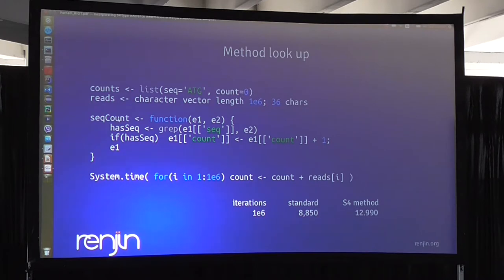This is a very simple basic function to just show the effect. This is a function that counts how often the sequence ATG, which is the start of any given gene, occurs in a vector of a million reads that contain 36 characters. You do a grep whether this ATG is there, and if it's there then you increase the count with one. If you use this standard function for a million reads, it's going to take you about nine seconds. You do the same with S4 method - you change these counts to an S4 object with the slot and do exactly the same - then it's going to take you 50% longer to perform the same operation.